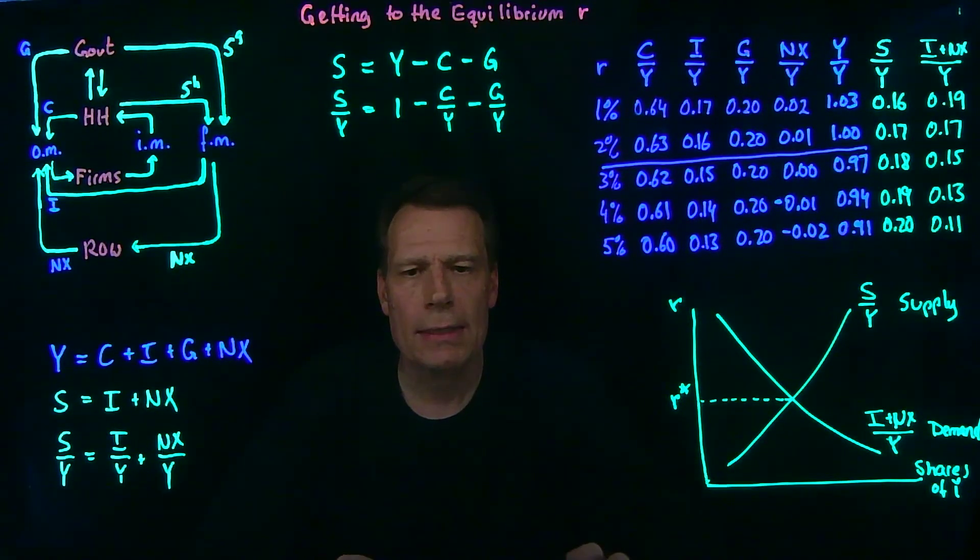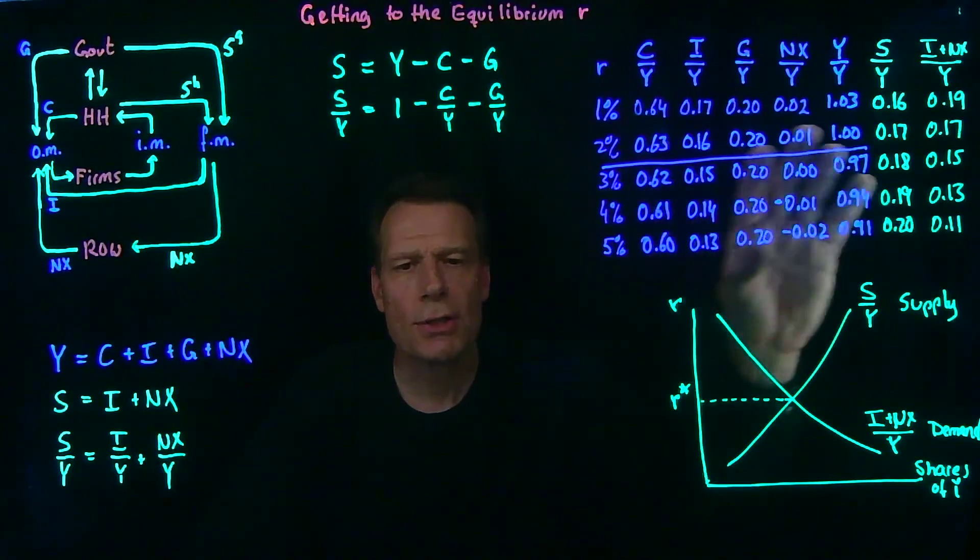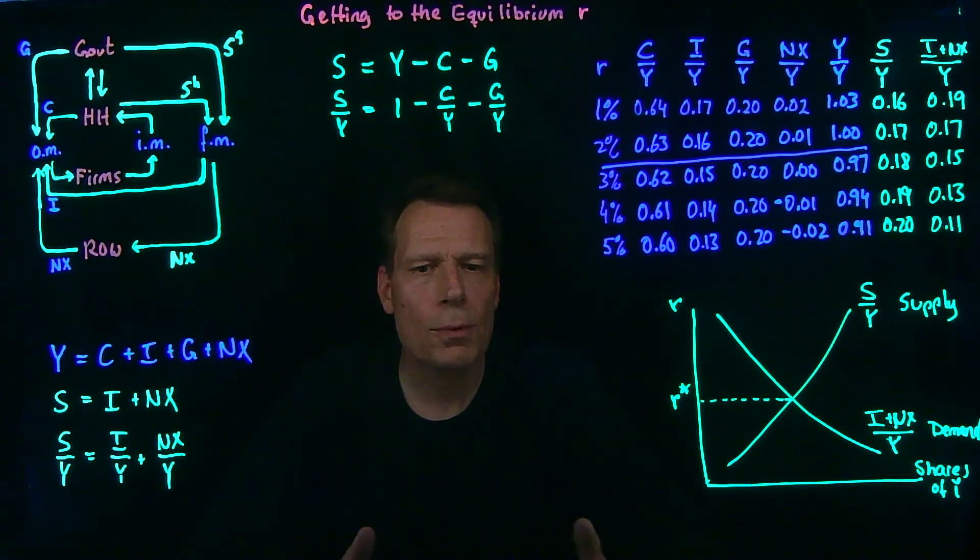So if this column changes to 0.29, I want you to rewrite this table and see what changes in the table. And then use what we've done to see whether you can identify where the new equilibrium and the new equilibrium real interest rate will lie. So go ahead and write out this table, take the quiz, and we'll talk more about this in class.